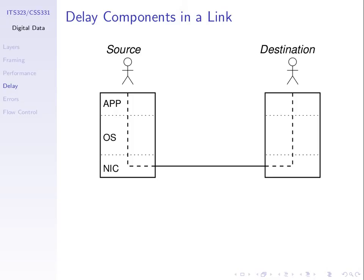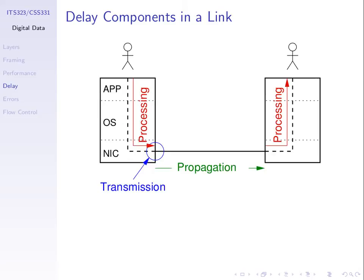There are other delay components as well. Processing delay is the time spent inside a computing device — the application reads the message, puts it in the right format, sends it to the operating system, then to the network interface card, and that all takes time. When someone presses send, that processing time before anything is transmitted counts as processing delay. It occurs at both the transmitter and receiver.